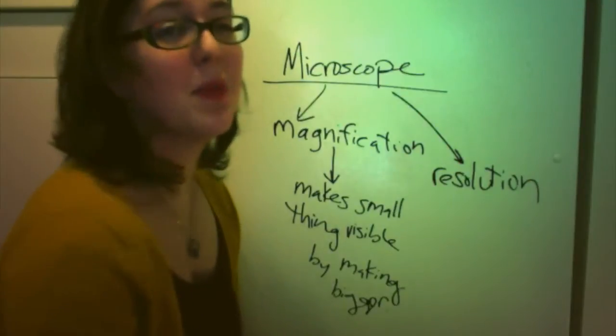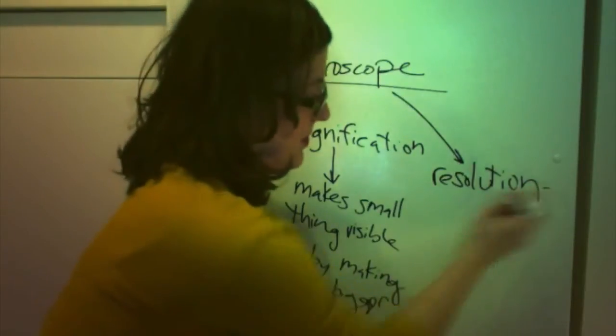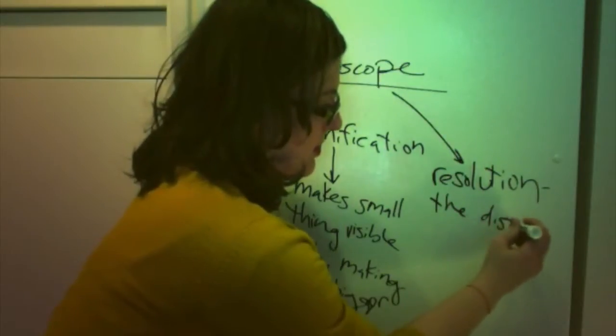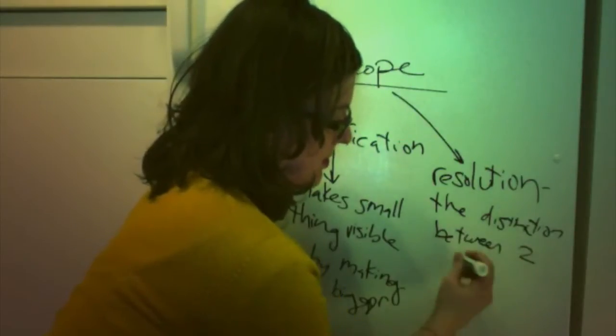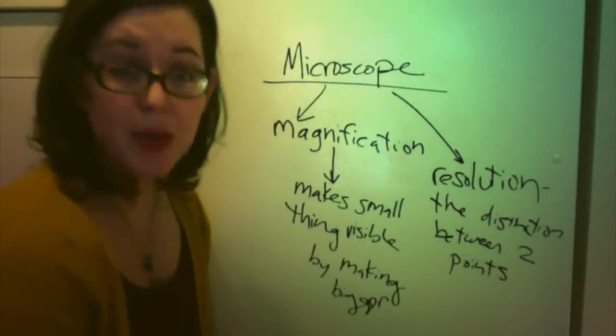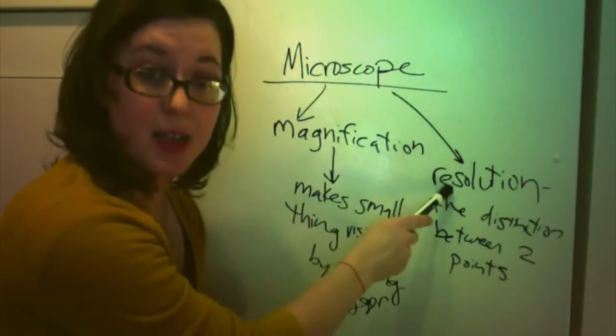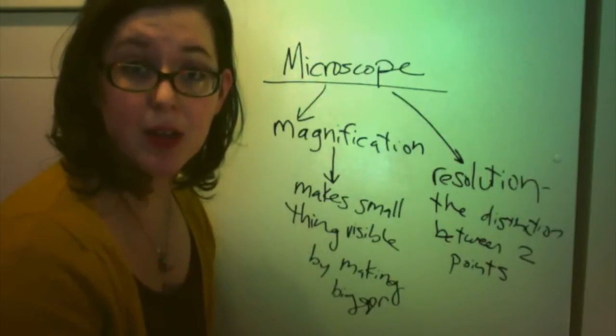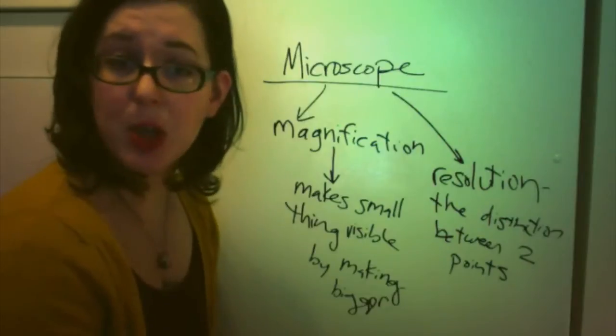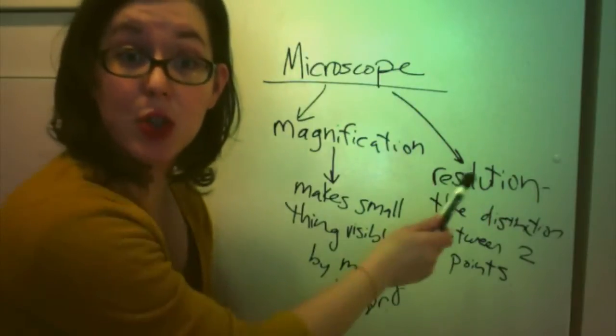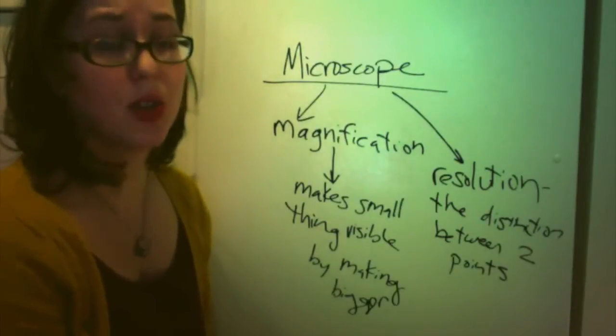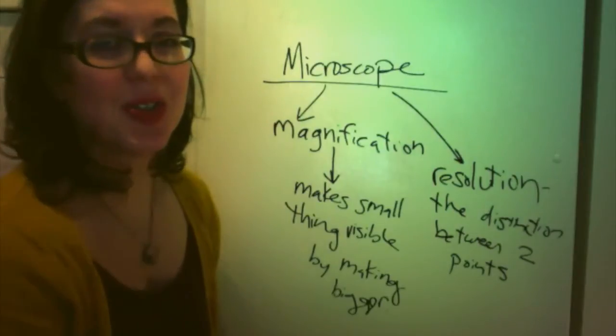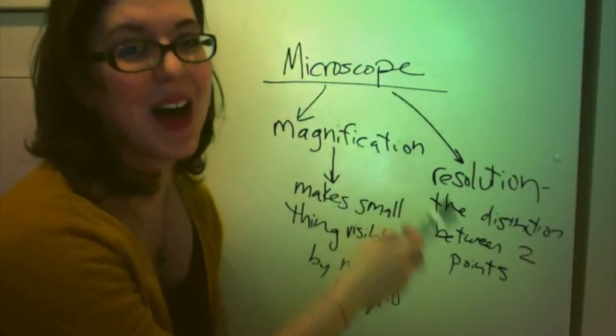The definition of magnification, as we used in class, is that it just makes things bigger under the microscope. So it makes small things visible by making them bigger. And resolution was what? The distinction between two points. What's important for you to understand is that these are both independent terms when talking about the functions of a microscope. You can have a microscope that has high resolution but low magnification, or high magnification with poor resolution. And hopefully, you get to work on the microscope that has high magnification and also high resolution.